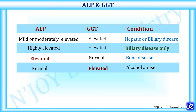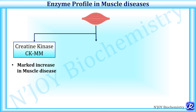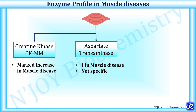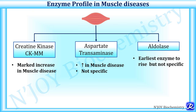The enzyme profile in muscle diseases includes estimation of creatine kinase, specifically the CK-MM isoenzyme, with a marked increase seen in muscle disease. The second enzyme increased in muscle diseases is AST, but it is not specific as it is also increased in liver disease. Aldolase is the earliest enzyme to rise in muscle disease, but it is also not specific.